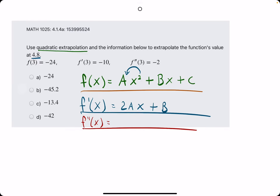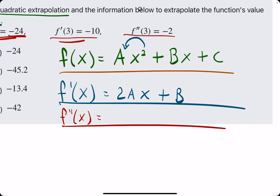It's only in quadratic extrapolation that we'll use all three values given. In linear, we only use the first two. In constant, we only use the first one. So you can pick up on that pattern as you work through these. F double prime is the derivative of 2ax — 2a is just a constant multiplied by x, so the derivative is just that constant — and b is a constant so it goes to 0. So f double prime equals 2a.